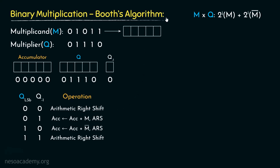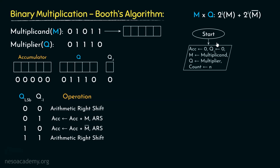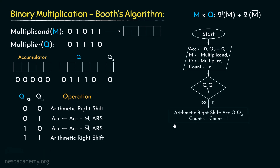Let's now observe Booth's algorithm's flowchart. We start, then initialize the accumulator with 0, the flip-flop Q-1 with 0, store the multiplicand in register M, store the multiplier in register Q, and have another register storing the count N — the number of bits in the multiplier. Once the inputs are taken, we check the bits Q0 and Q-1, that is the LSB of Q and the Q-1 flip-flop. In case these two are either 0, 0 or 1, 1, we perform arithmetic right shift on the accumulator, Q, and Q-1, and also reduce the count by 1.